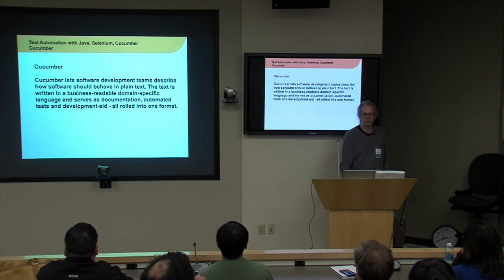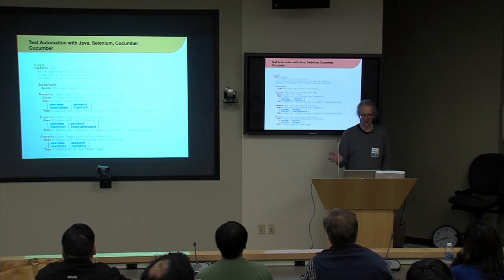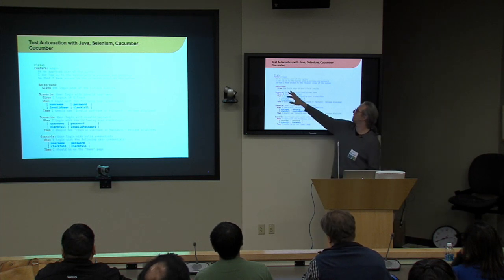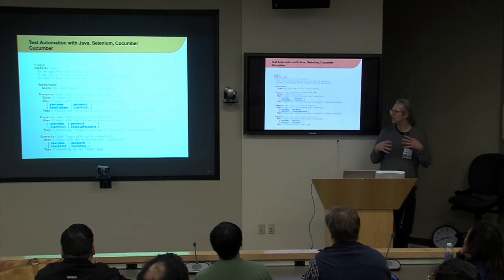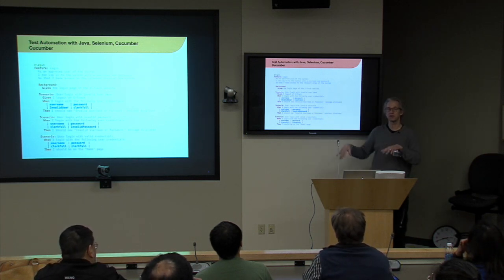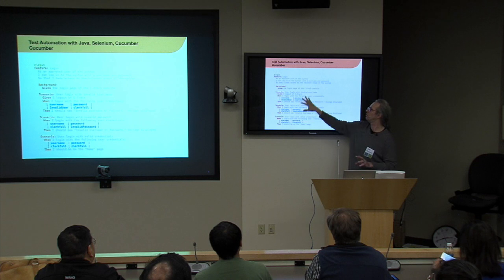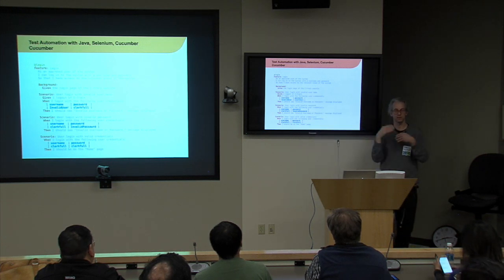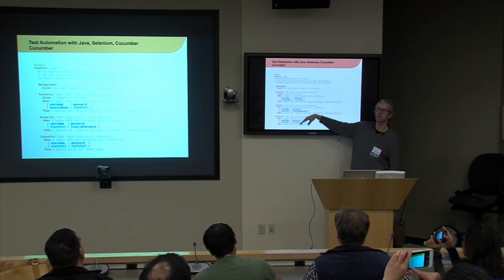Cucumber uses a syntax called Gherkin — given/when/then — so it's easy to read. Initially when I was asked to write with it I was skeptical. The original purpose was to provide specifications to BAs who would write them because it's non-technical, providing direction for automation writing. In practice, that never really happens — it's usually the automation developers writing it.